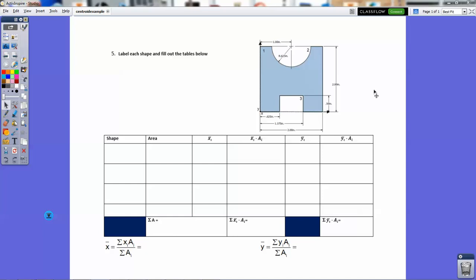Well, not so quick, I guess, but an example of a centroid, a composite centroid problem with negative area.